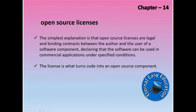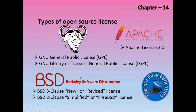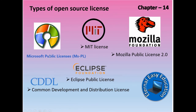There is also the concept of open source licenses, which govern who can use and modify the software. Open source licenses are legal and binding contracts between the author and the user of a software component, declaring that the software can be used in commercial applications under specified conditions. This license is what turns code into an open source component. There are many open source licenses, including the General Public License (GPL), GNU Lesser General Public License, Apache License, BSD Revised License, Simplified or FreeBSD License, Microsoft Public License, MIT License, Mozilla Public License, Eclipse, and Common Development and Distribution License.